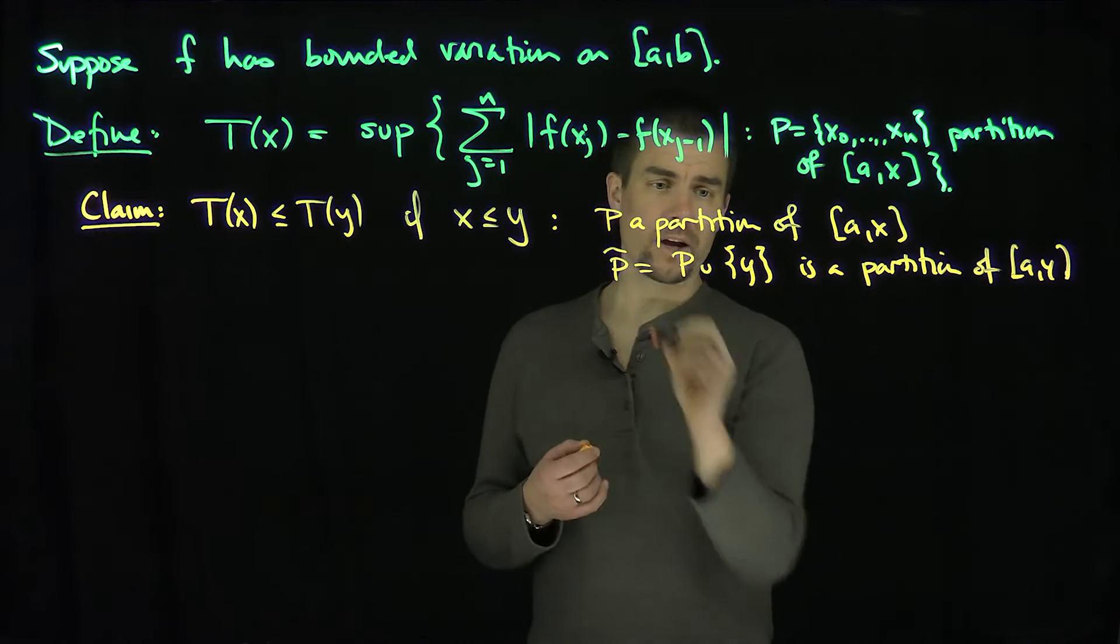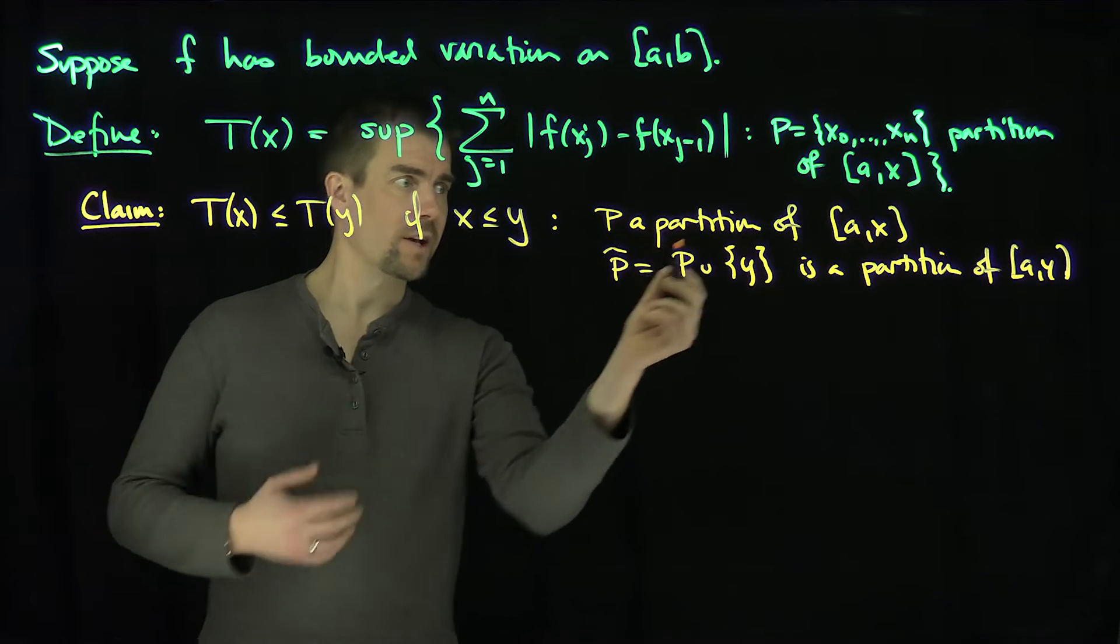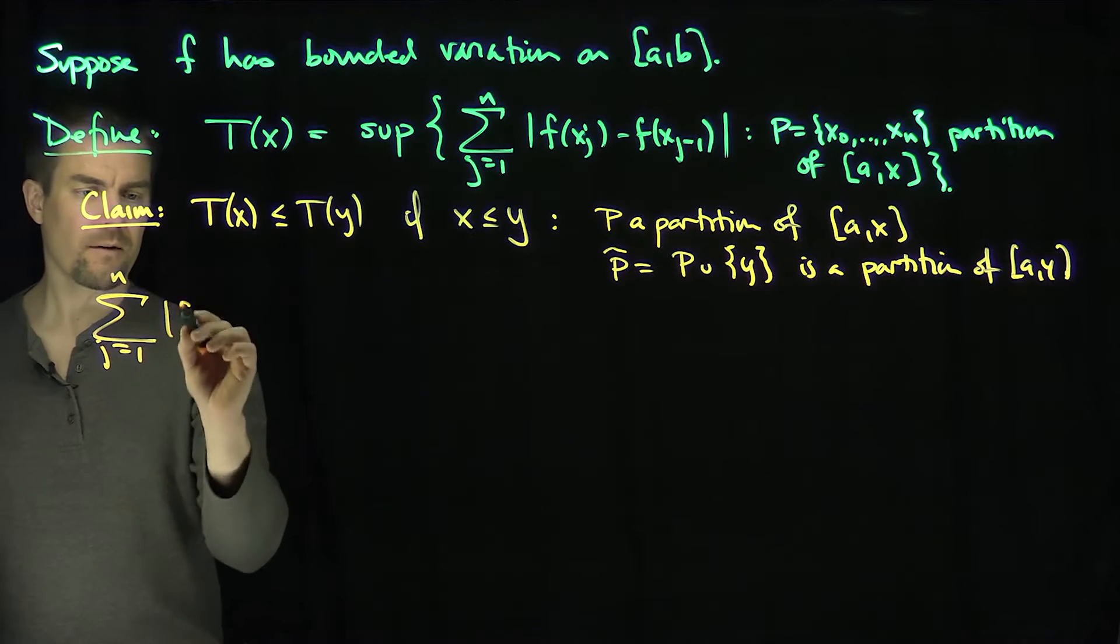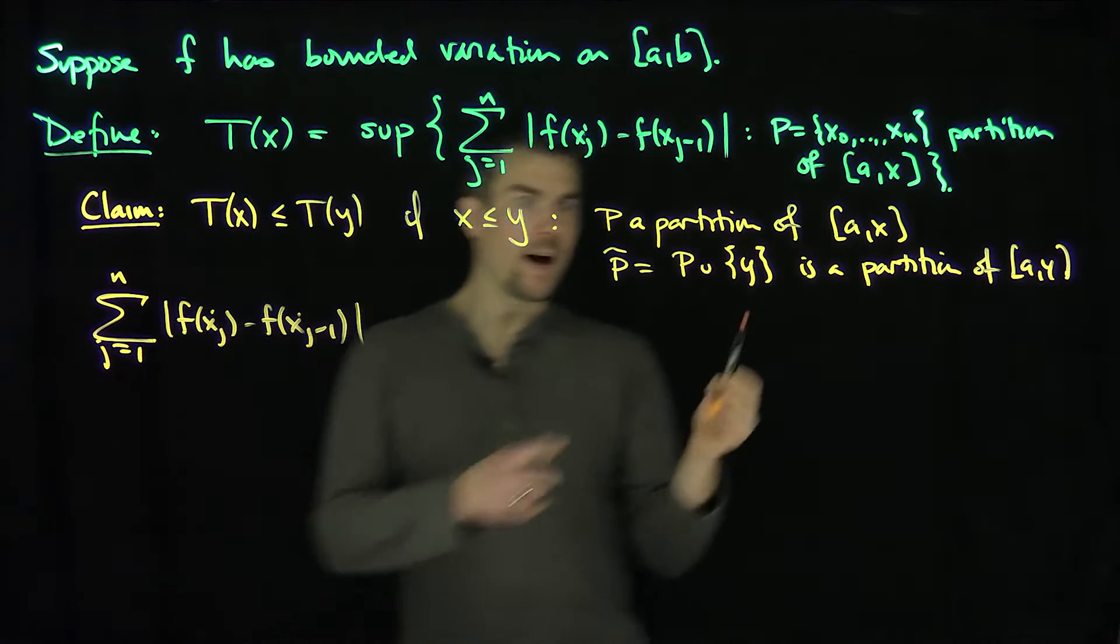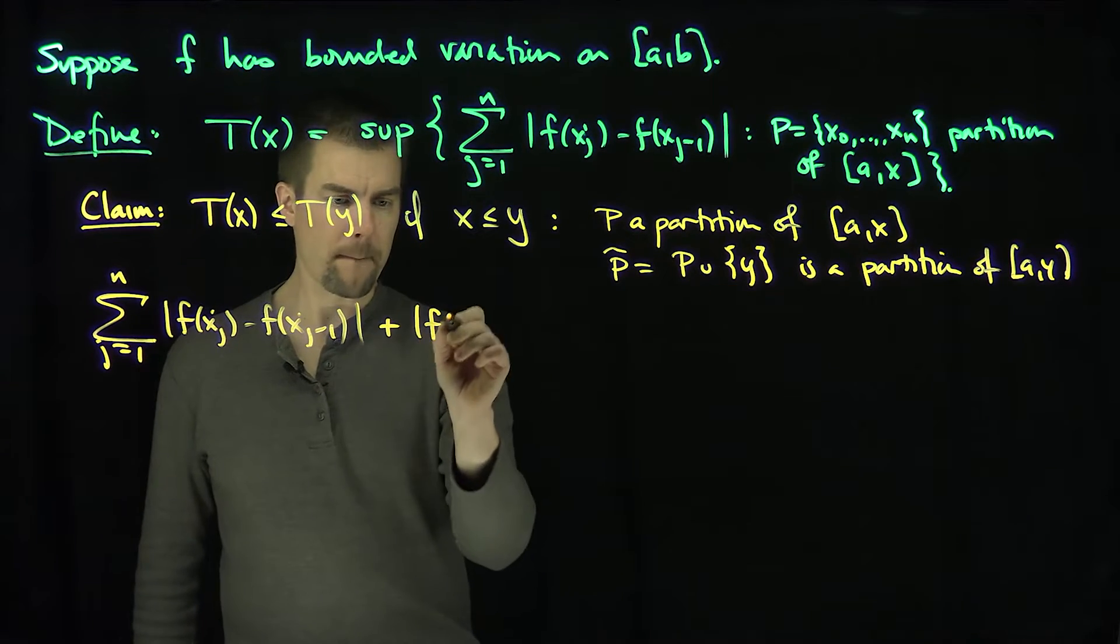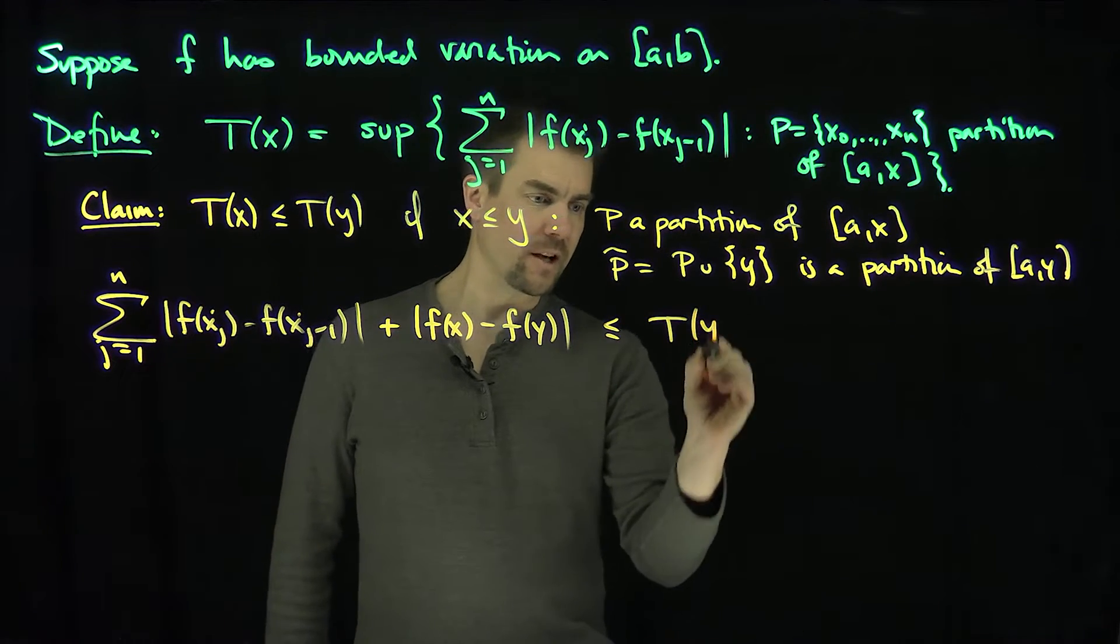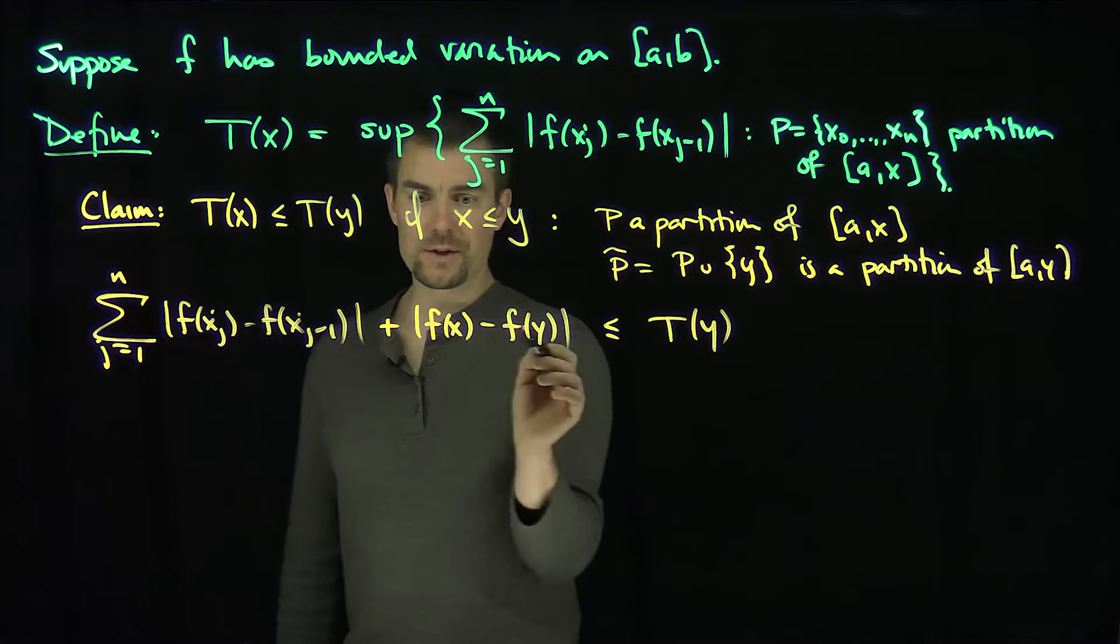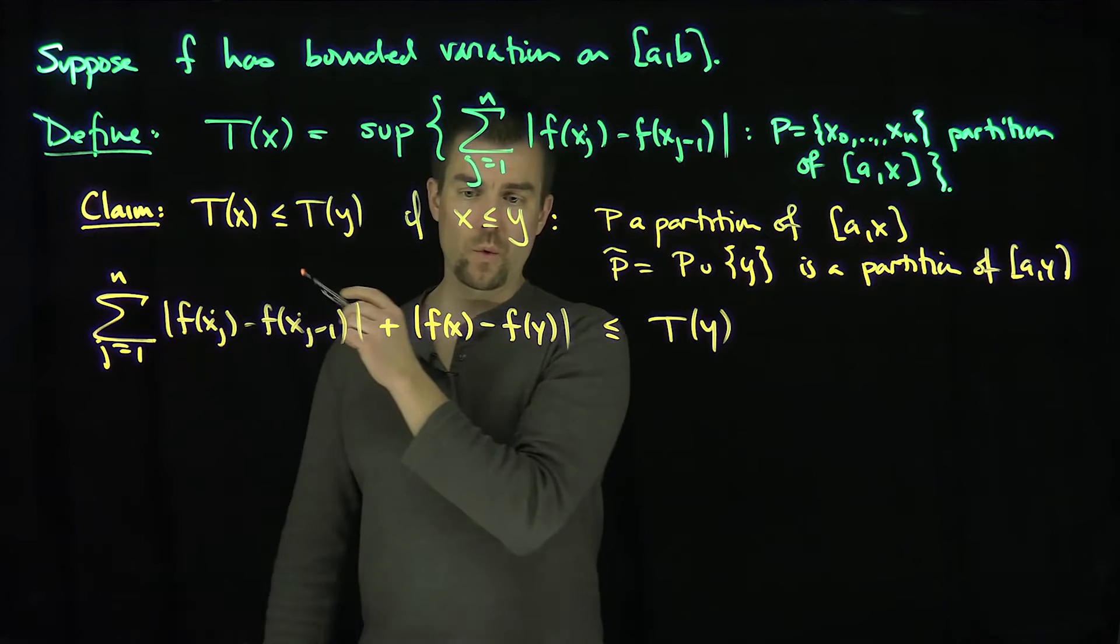And that gives us really good information because if I have any partition of A to x, then I can write down the sum j goes from 1 to n of F of xj minus F of xj minus 1. If I add on the difference between F of y and F of x, this is always going to be less than or equal to T of y, because that's one such partition, P tilde.